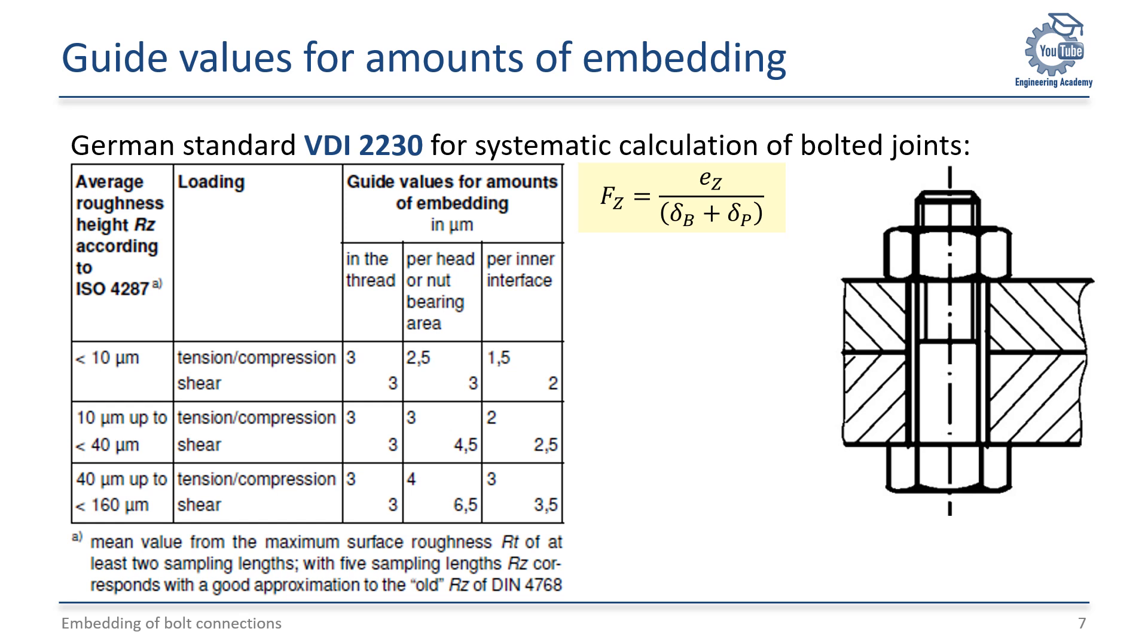Embedding depends on the amount of contact surfaces, surface roughness within these contacts, and the loading direction. The German standard VDI 2230 for systematic calculation of highly stressed bolt joints gives us guide values for the occurring amount of embedding of bolts, nuts, and compact clamped parts made of steel without coatings.